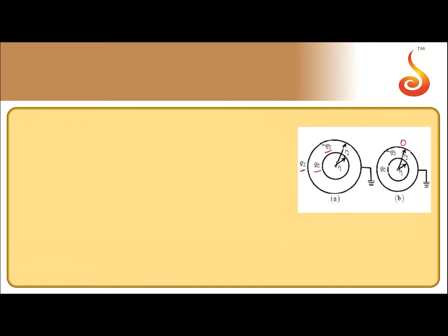Since the outer shell is grounded, the potential on the outer shell will be equal to zero. The potential on the outer shell is due to: the charge on the inner sphere — kq₀ divided by r₂ — plus the induced charge on the inner surface of the outer shell — minus kq₀ divided by r₂ — plus the charge on itself, q₂ divided by r₂, and this equals zero.